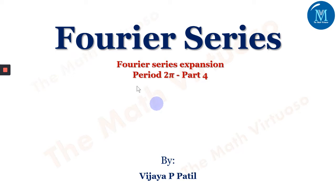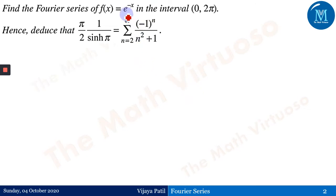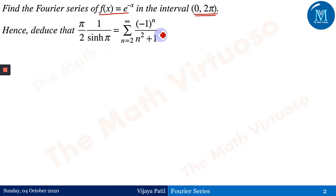Hello everyone. In continuation with the Fourier series, we are still dealing with period 2π functions on the interval 0 to 2π. This is Part 4 — there are more parts because each question has to be dealt with differently and the type of integration would be different. In this question, the function is e^(−x) on the interval 0 to 2π, which is an exponential function and involves a deduction part.